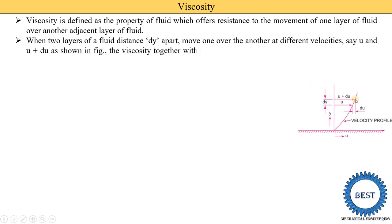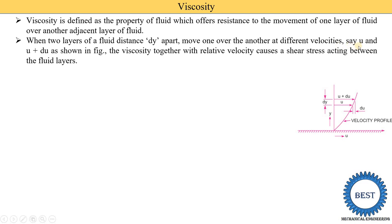When two layers of fluid are a distance dy apart — here we see the first layer and the second layer, with distance dy between them — they move one over another at different velocities. The velocity of one layer is u and the other is u plus du, as shown in the figure.